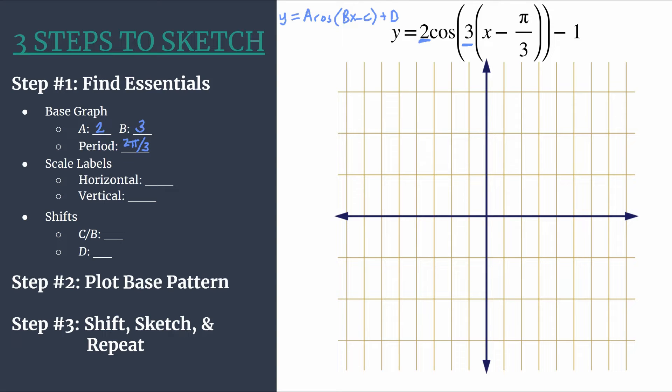And remember period is the length of one horizontal cycle. So that goes hand in hand with what we were saying earlier about b, that three cycles will happen between zero and two pi. So that's three times of two pi over three.